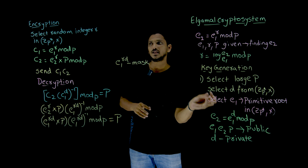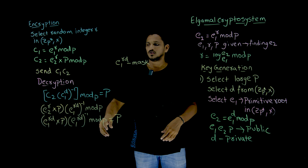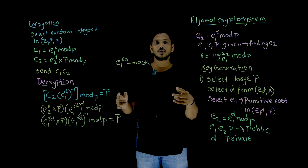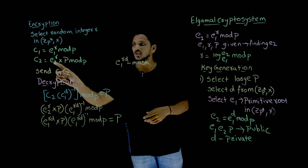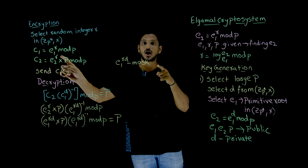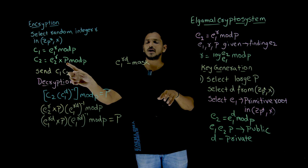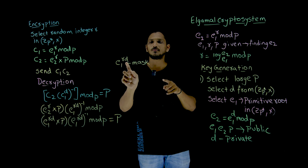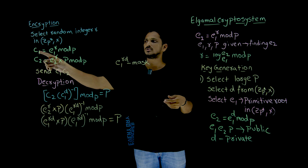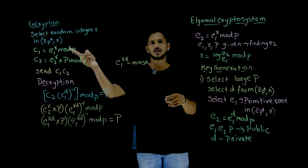So in the ElGamal system: the receiver indirectly provided d to the sender via e2, and the sender indirectly provided r to the receiver via c1. Both r and d are used together as the mask e1 power r·d. Even though you know e2 you cannot identify d, and even though you know c1 you cannot identify r — but both values are used by sender and receiver together.